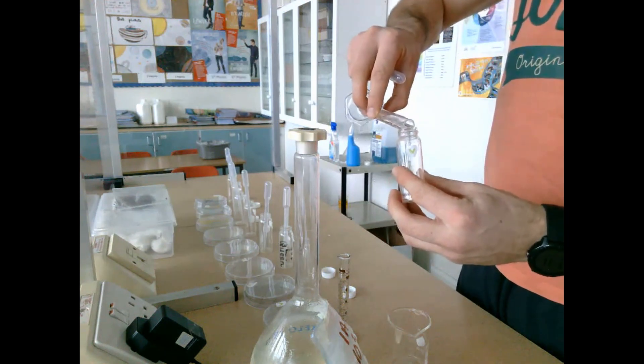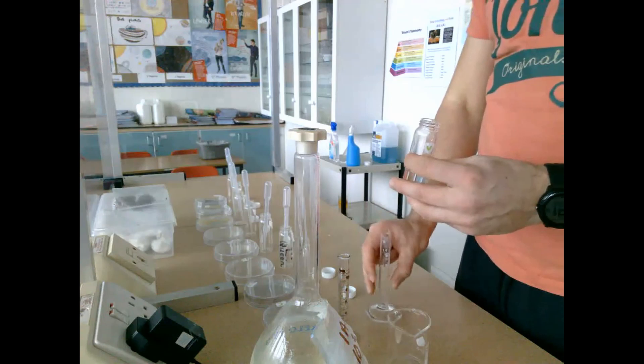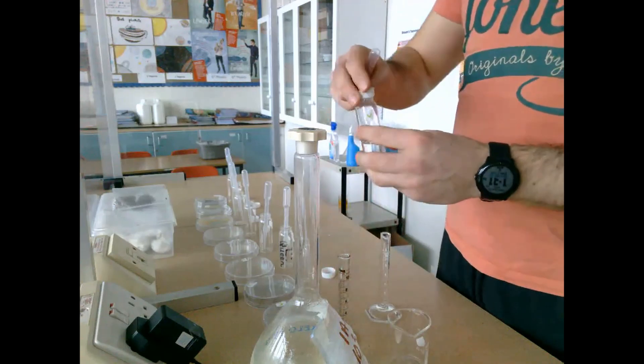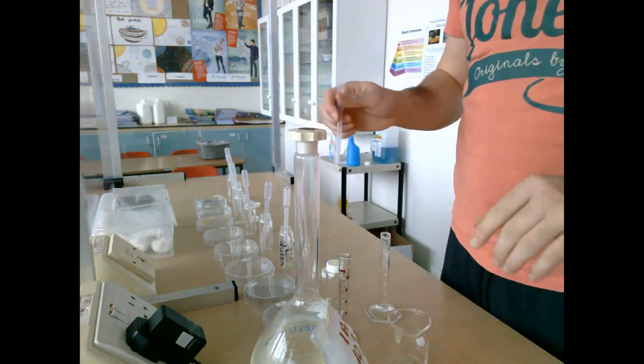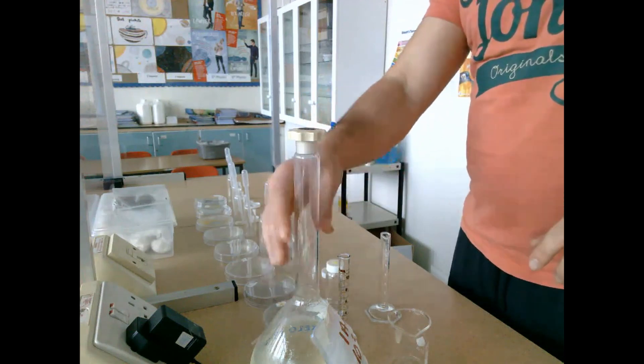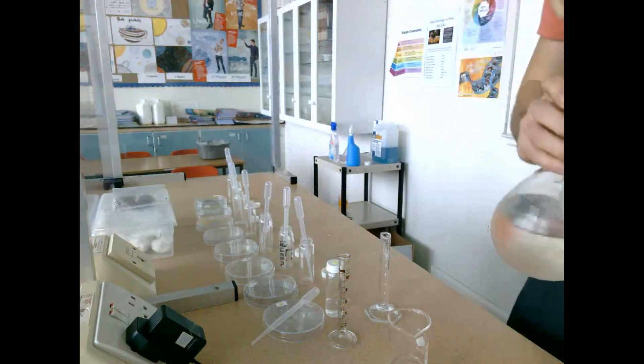Glass jar number one is going to act as the control. When this glass jar gets added to the petri dish with the radish seeds later on, it will show us growth comparison in comparison to all the IAA plates we're going to look at.